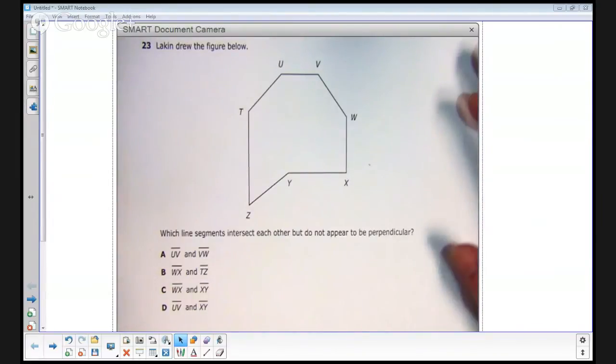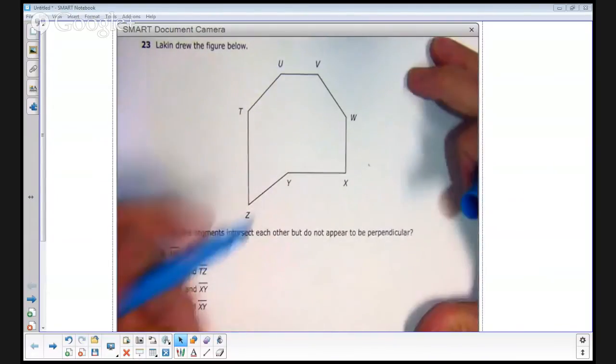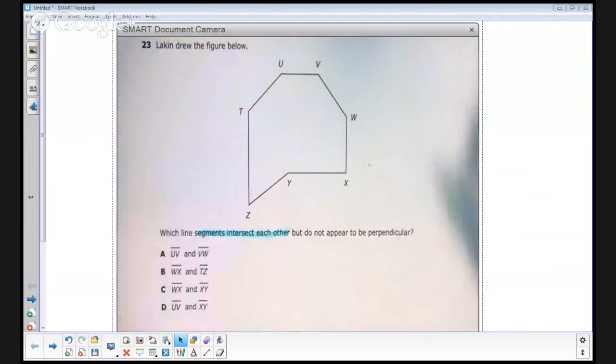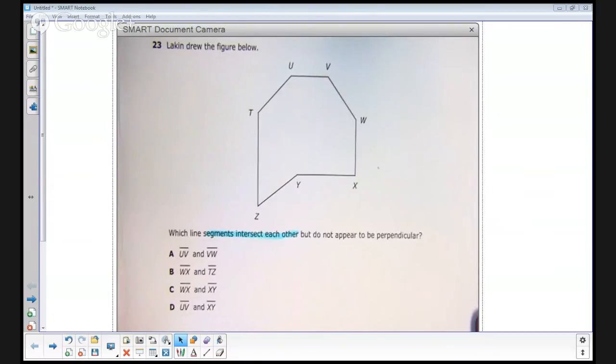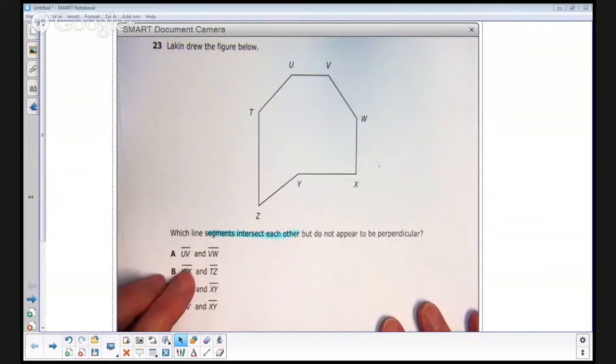So let's see. It says which line segments intersect each other? I'm going to use blue. These segments need to intersect each other. Let's take a look at each of the answer choices and we can pretty much throw out some answers because not all of these pairs intersect each other.